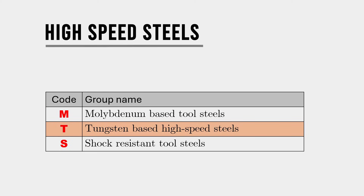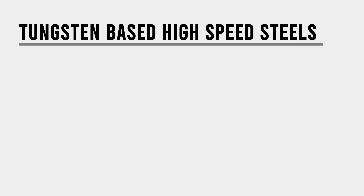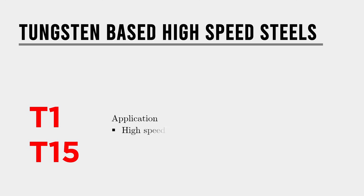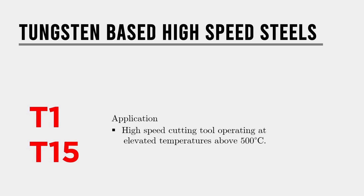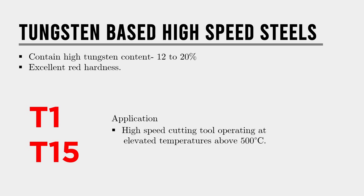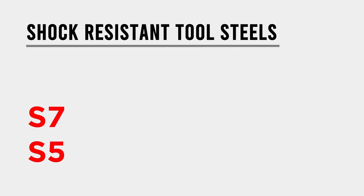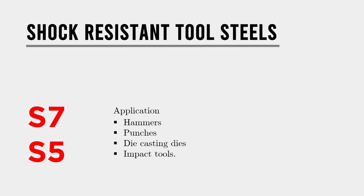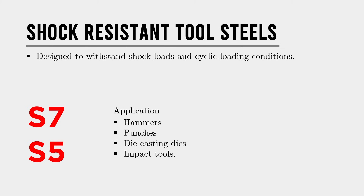The T grade, or tungsten-based high speed steel — popular grades T1 and T15 — are used for high speed cutting tools operating at elevated temperatures above 500°C. They contain high tungsten content, typically 12 to 20%, which gives them excellent red hardness. The S grade, or shock resistant tool steel — popular grades S7 and S5 — are used for tools like hammers, punches, die casting dies, and other impact tools. They are designed to withstand shock loads and cyclic loading conditions, containing vanadium and tungsten for added toughness and impact resistance.